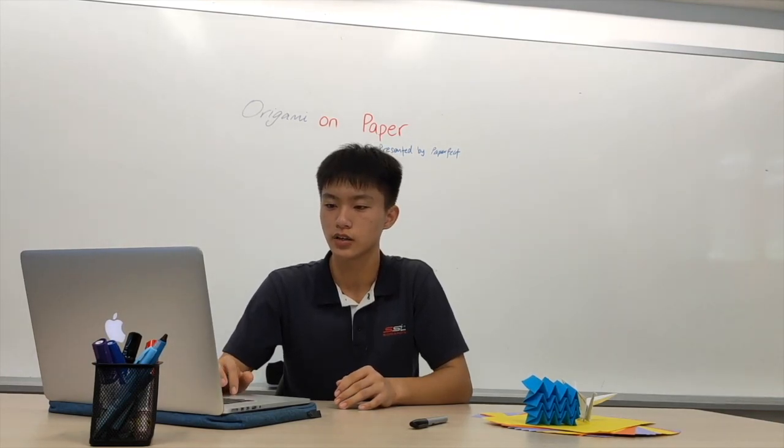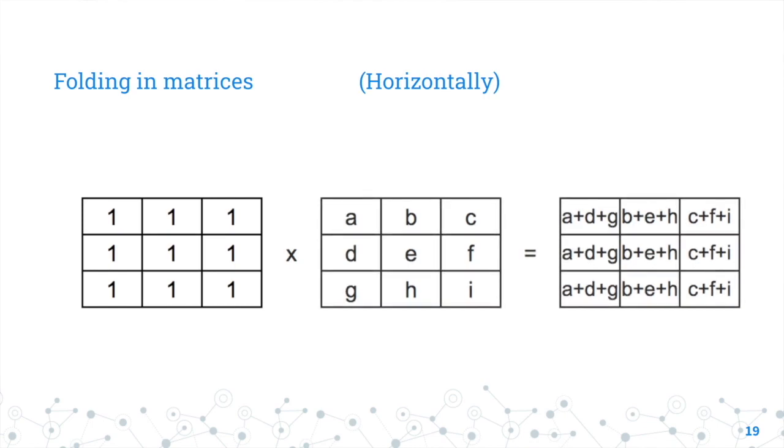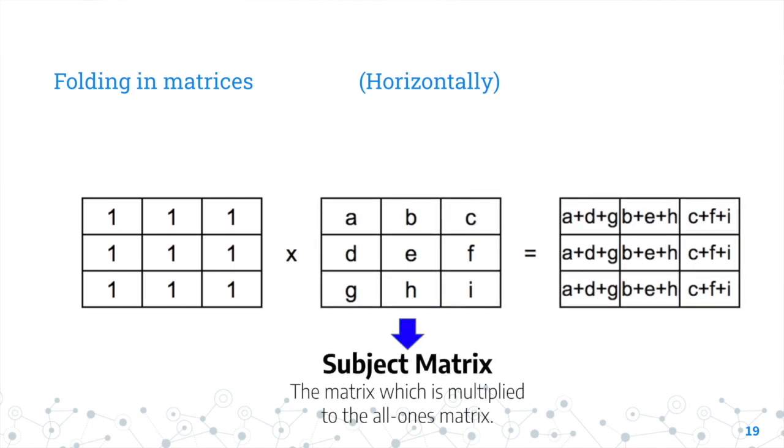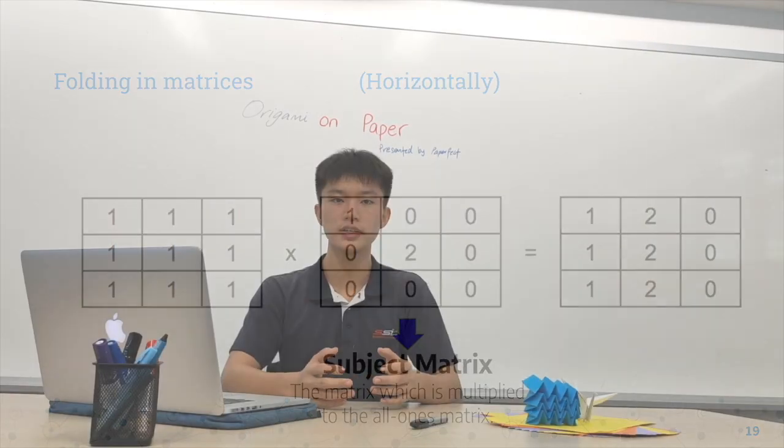So to go about doing this, we have to first start off simple. We started off with a 3×3 matrix. And to simulate a single layered paper, we assigned one to all the squares in the matrix, which is basically the all-ones matrix. Then, we multiply the all-ones matrix to a matrix containing alphabets, which we then define as the subject matrix. When we do so, we get a formulated matrix. Looking at the matrix formula, we observe that when we multiply an all-ones matrix to another matrix, the numbers along the columns of the resulted matrix add up to the same number. Hence, when we substitute the alphabets with values 1 and 2, the resultant matrix seems to show a paper folding horizontally as the layer on the right has folded onto the center layer. So this is how we fold a paper horizontally in terms of a matrix.